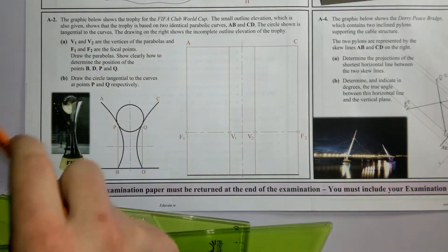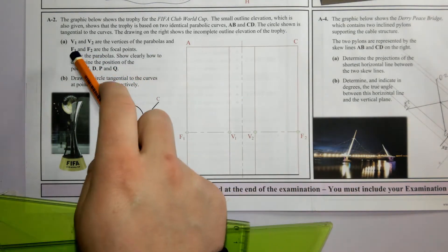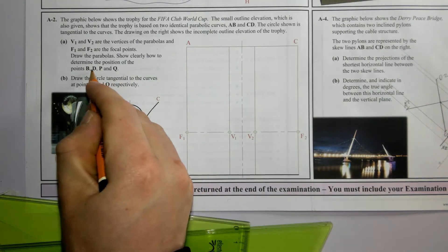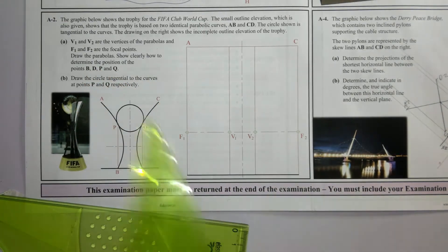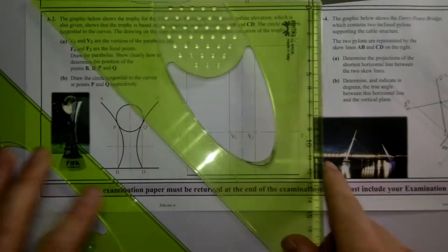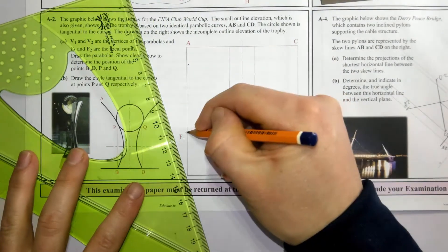Draw the parabolas and show clearly how to determine the positions of B, D, P, and Q. We're going to draw a parabola using the rectangle method. This is the centerline of the rectangle. One half of the parabola is up here and the other half is down below.